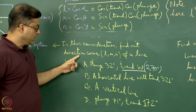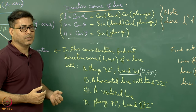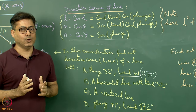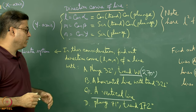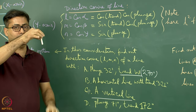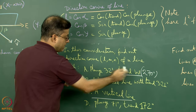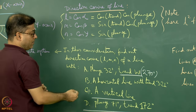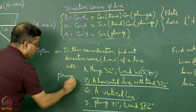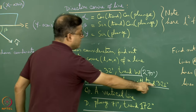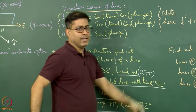Students are requested to stop the video, solve all these problems, and then continue to see the explanation. For a vertical line, the plunge is 90° and the trend is undefined — how will you handle that? For a horizontal line with trend 321°, the plunge is 0°. In all cases, l² + m² + n² must equal 1 as a check.